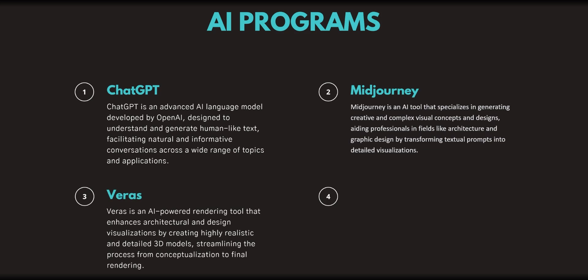Next is Veras. Veras is an AI-powered rendering tool that enhances architectural design visualizations by creating highly realistic and detailed 3D models, streamlining the process from conceptualization to final rendering. This works with Revit and BIM programs as well as programs like SketchUp, where it can learn about the model information from the plans and materials, and start to generate beautiful textures as well as environment backgrounds and even people.